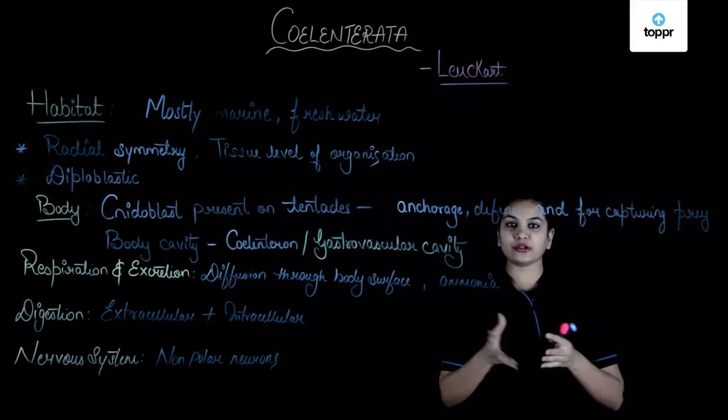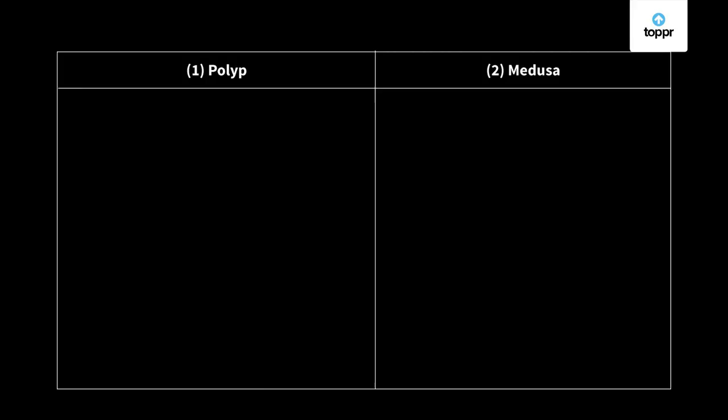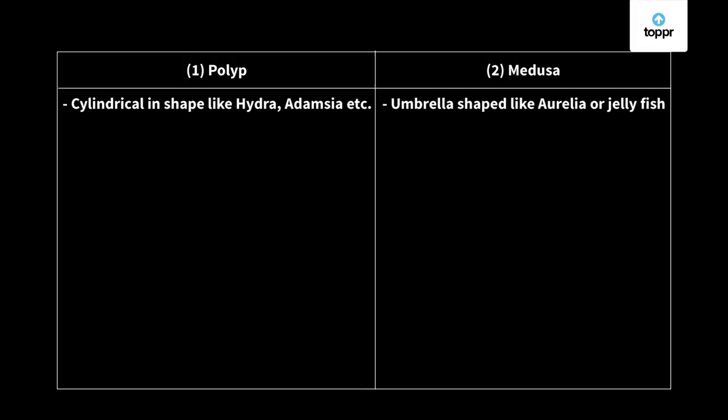Moving forward, let's look at their reproduction. Coelenterates are found in two forms: the first is the polyp and the second is medusa. Polyps are usually cylindrical in shape like hydra and adamsia, whereas medusa are umbrella-shaped like aurelia or jellyfish.